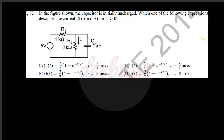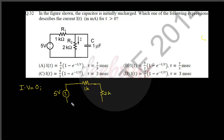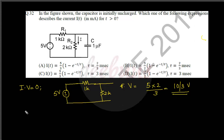Next question: the capacitor is initially uncharged, meaning initial voltage = 0. We draw the final steady-state equivalent: 5 V source, 1 kΩ, 2 kΩ, and the capacitor as an open circuit. The final voltage = 5 × 2 / (2 + 1) = 10/3 V. We use the capacitor charging expression: v(t) = V_final − (V_final − V_initial)·e^(−t/τ).